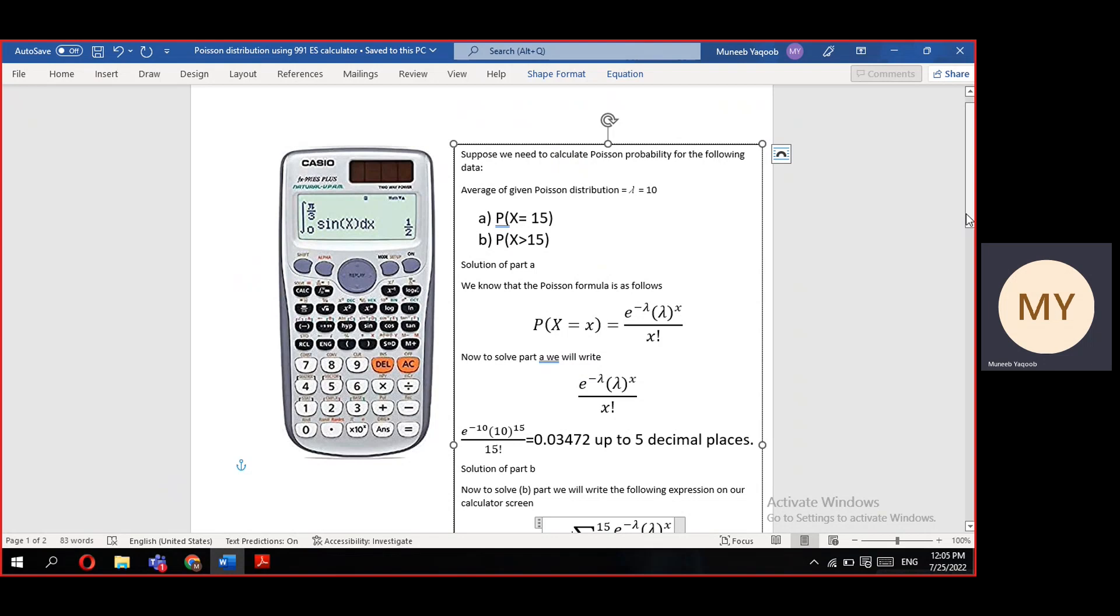To solve part A, first press the shift button and then the LN button just beneath the log button. E will appear on your screen. Now as the power of E, write minus 10 as the average number of Poisson distribution is 10.